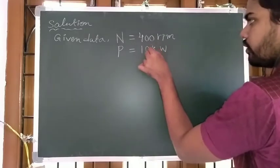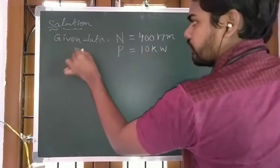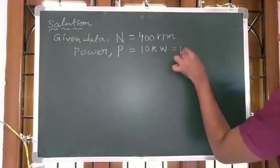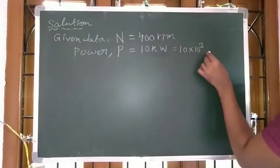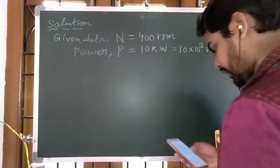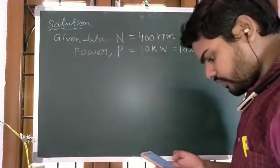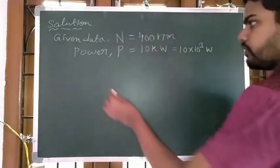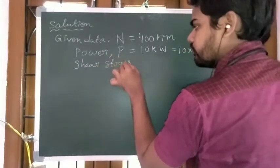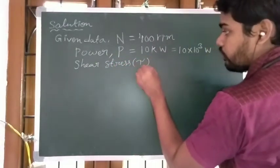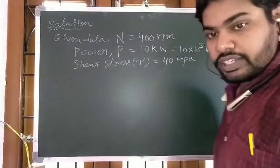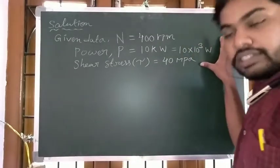P is equal to 10 kilowatt, which can be written as 10 into 10 cubed watts, since 1 kilowatt equals 10 cubed watts. Also, allowable shear stress is 40 MPa, which is our given shear stress.